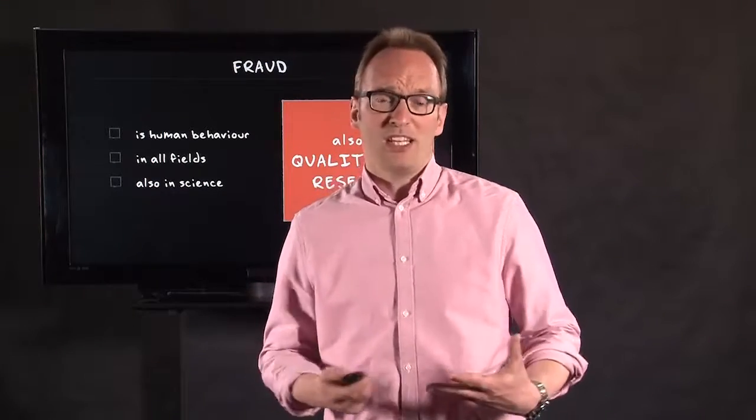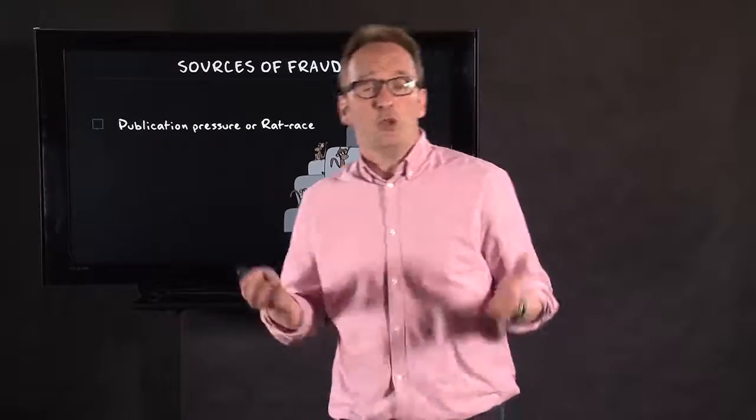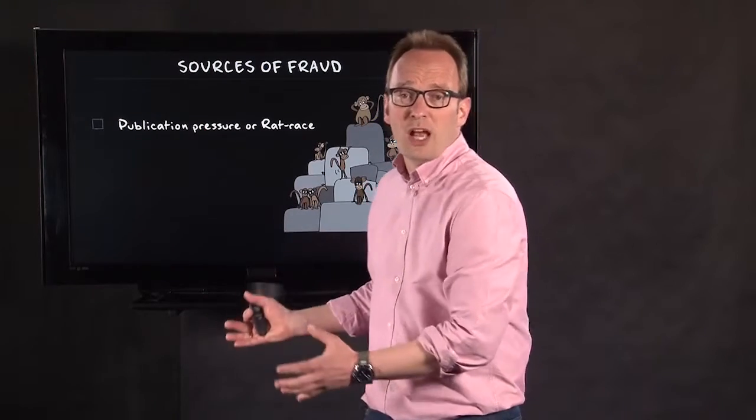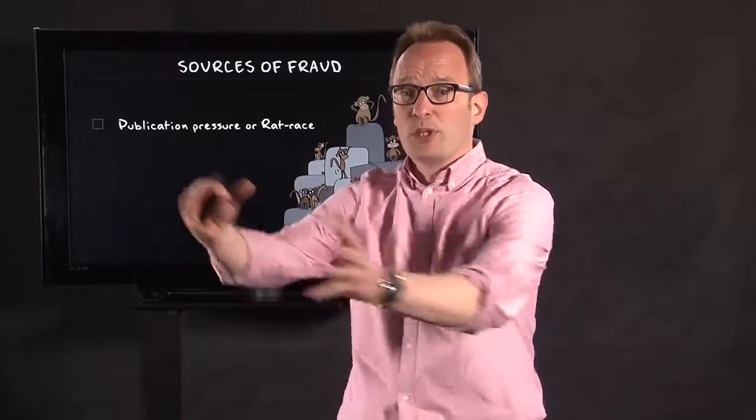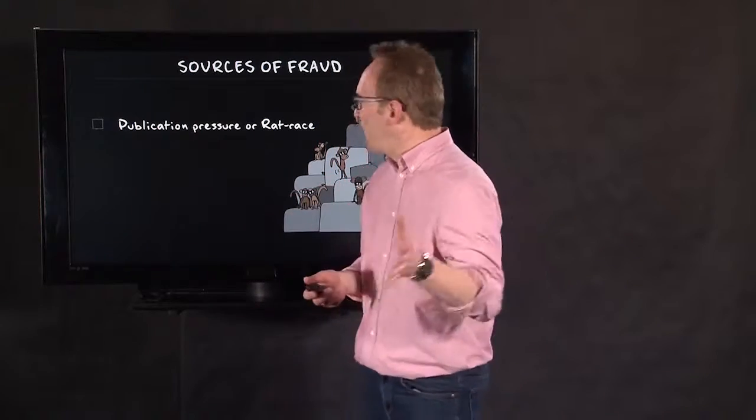Why can scientists become frauds? There are three different reasons. The first reason is publication pressure. If you do not publish in science, you perish — you simply disappear. If you do not publish enough, you won't get a new contract. So what you have to do is do simple research and publish as much as possible, and then the step to fabricating research is not as big as we hope.